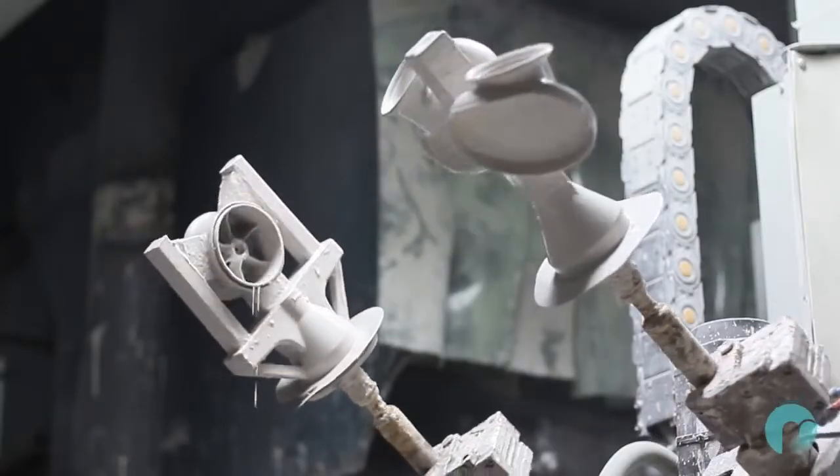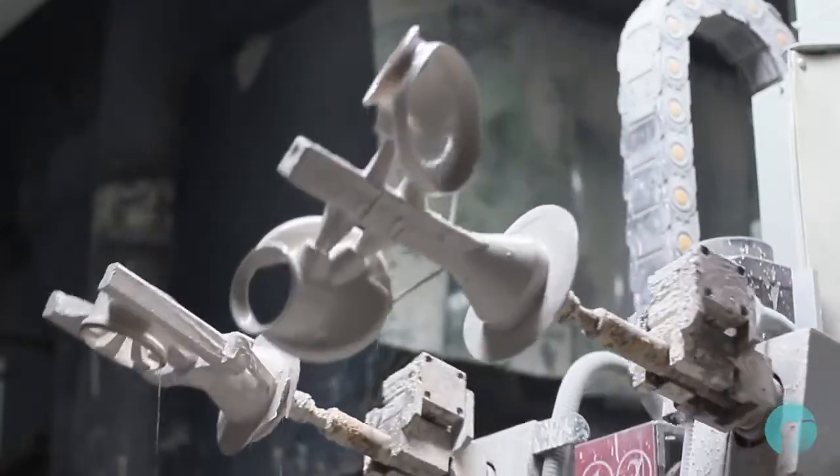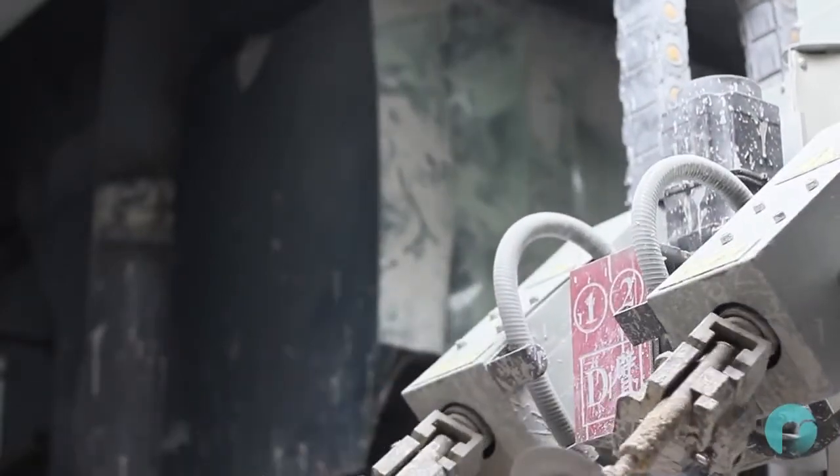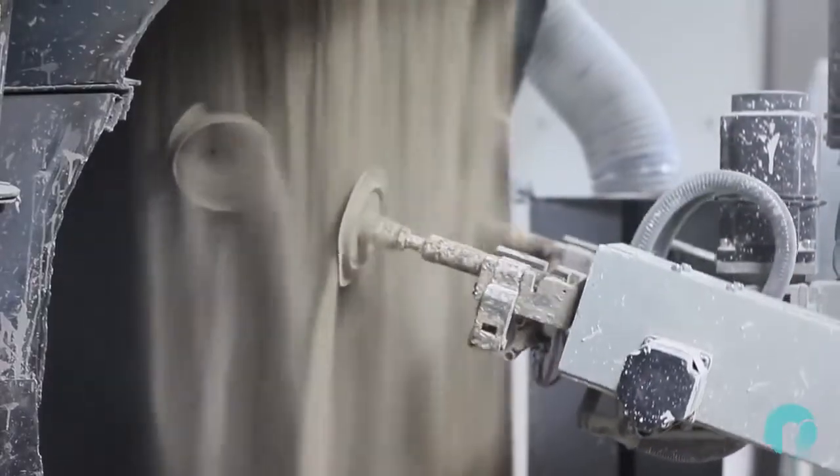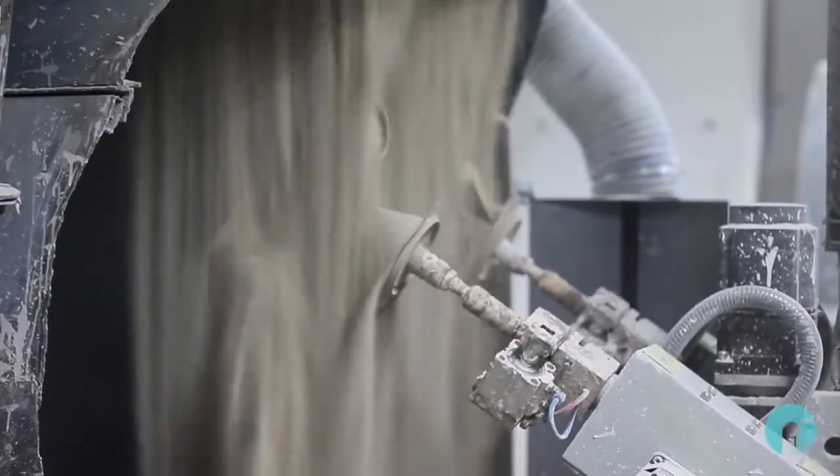The printed models receive a series of dippings in different viscosity liquids to build up the initial wall of the mold. This first layer is the most critical, as this will be the contact surface once the molten metal is cast.